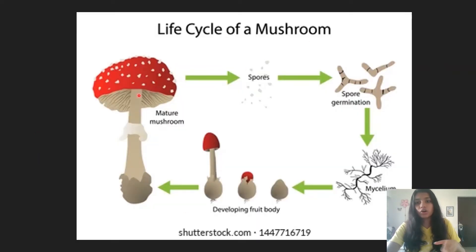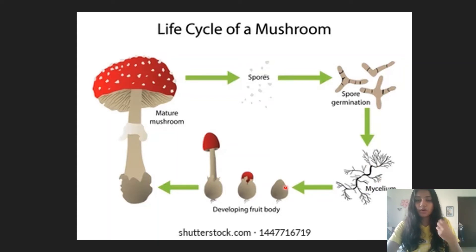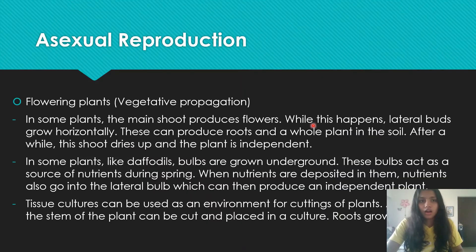The mushroom belongs to the fungi kingdom. It produces spores — circular-kind structures — which germinate and produce hyphae, the long thread-like structures. This develops into a body of mycelium, which then uses nutrients from various sources and develops into a proper mushroom body. That is how it obtains its nutrients.